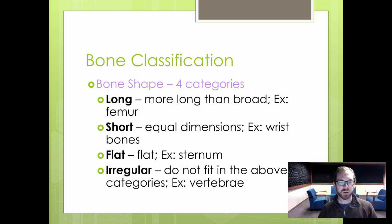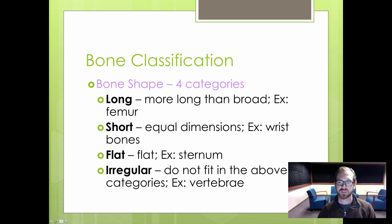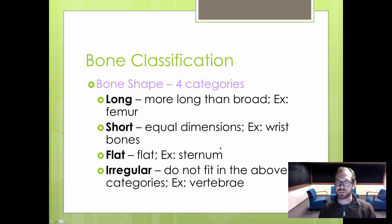On a larger scale, we can classify bones into four categories: long, short, flat, and irregular. Long bones are defined as more long than broad — for example, your femur. Short bones have equal dimensions, similar length and width, found in your wrist and ankle. Flat bones are relatively flat, such as your sternum. Irregular bones don't fit any of these categories — for example, a vertebra.